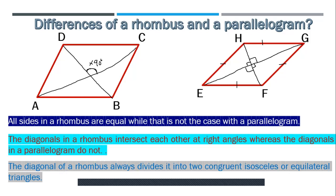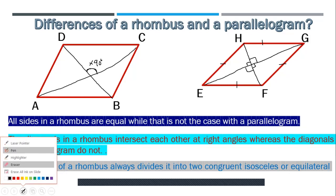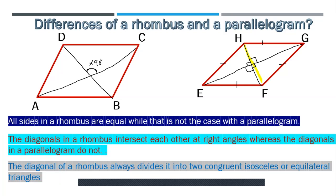For example, diagonal HF divides the rhombus into two isosceles triangles: triangle HGF and triangle HEF. Because the sides of a rhombus are all equal, it forms isosceles triangles. But if we look at parallelogram ABCD, when diagonal DB divides it into two, we get two congruent triangles, but they are not isosceles, because side DC is not equal to side CB.